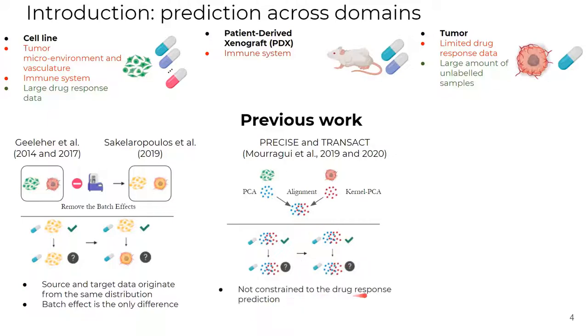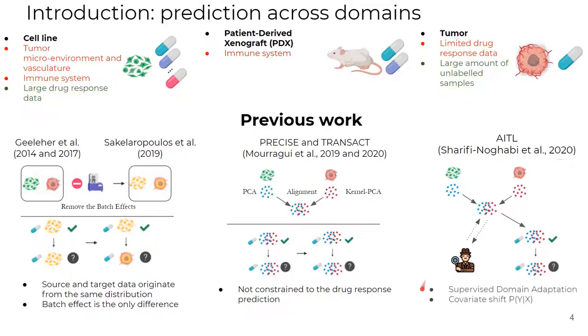Still, this projection is not constrained to the drug response prediction. AITL, from Sharifi-Noghabi et al., relies on an adversarial domain adaptation approach, where a discriminator is responsible to classify the sample domain, while the feature extractor aims to fool the discriminator. Here, we are left with a shared feature space between domains that can be used to predict cancer drug response.